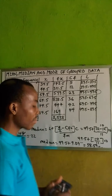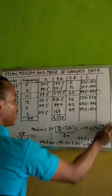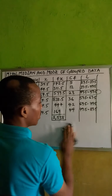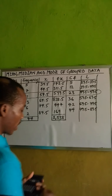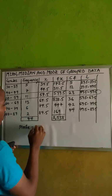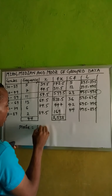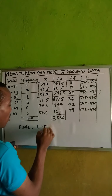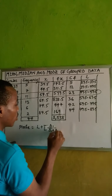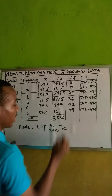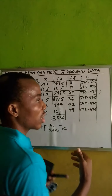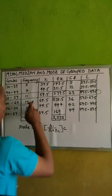This is the median. Now how do we find the mode? To get the mode, there is a formula: mode equals the lower class plus, open bracket, data 1 over (data 1 plus data 2), multiplied by the class size. Remember, the mode corresponds to the highest frequency, which is 13.